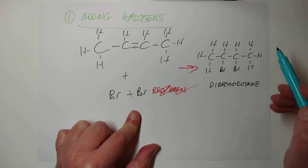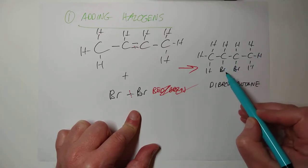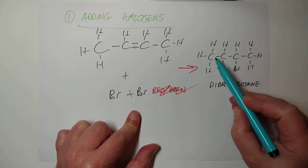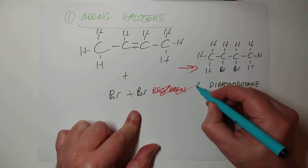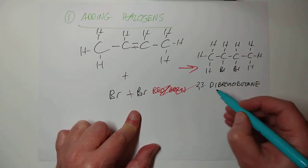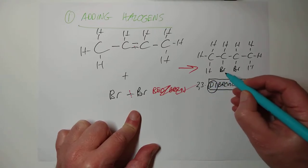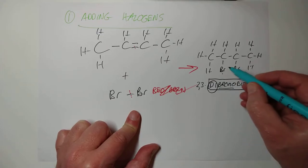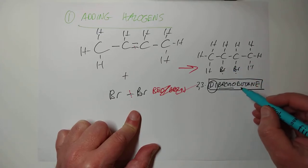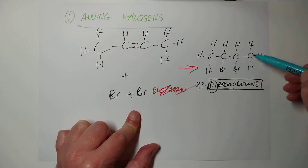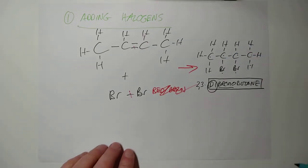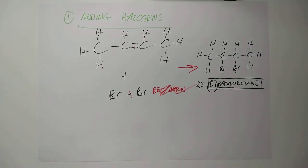If you want to be really precise, if you come back for more torture next year at higher, you're supposed to specify which carbons these bromines are on. So this would actually be 1,2 or 2,3-dibromobutane. Don't sweat that for national 5, though. But if you see that word there, then that is di-for-2, bromo because they're bromine, and butane, because 1,2,3,4, that's your basic skeleton.